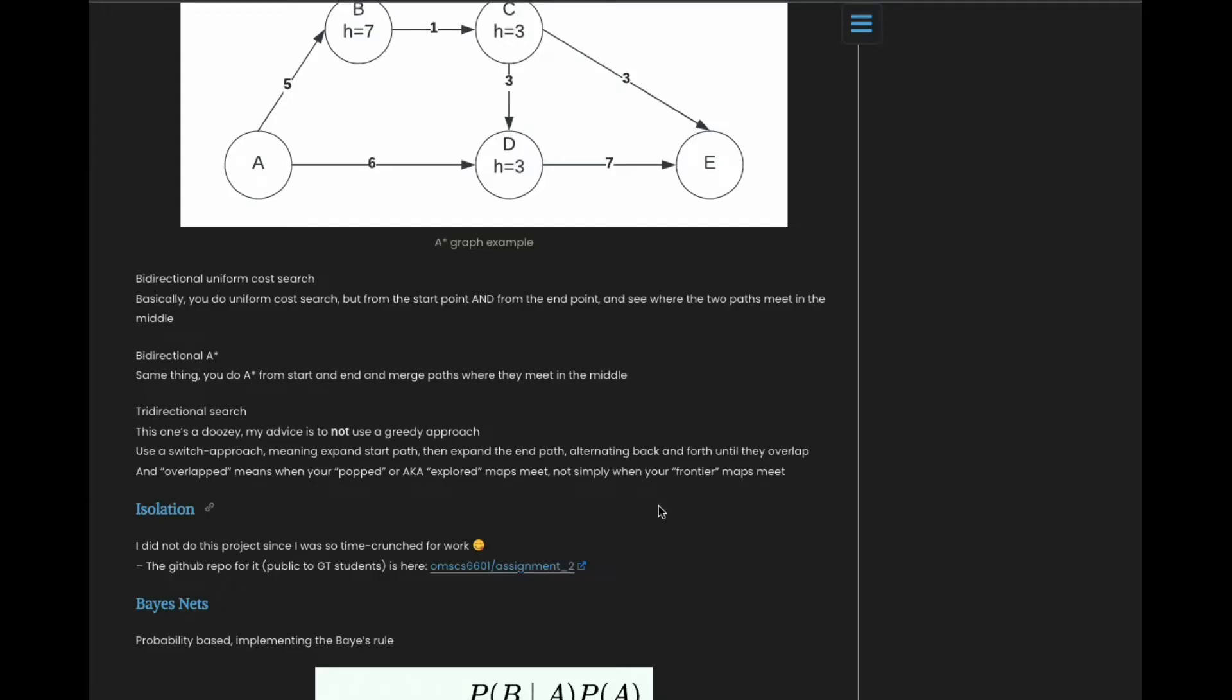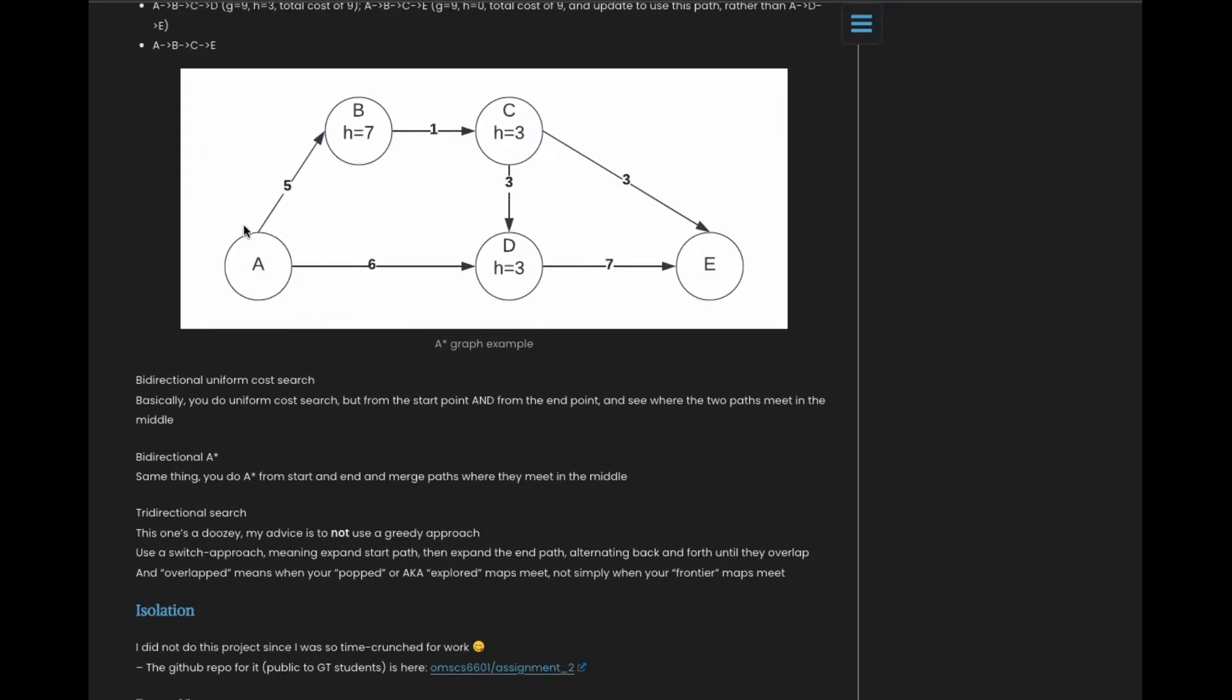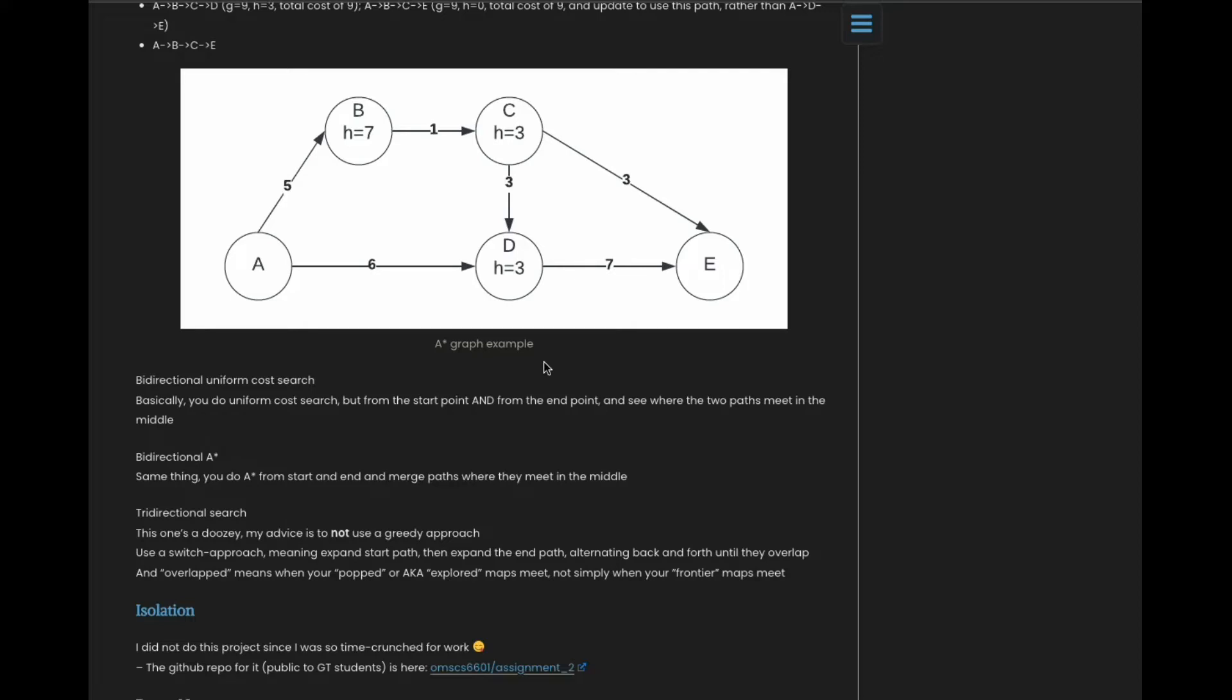The biggest advice is to switch between the three cities when you're expanding your paths. Go to the first city A, expand the paths so you get some new paths. Don't keep expanding A's paths. Go to the second city, which was C, and start to expand C's paths. Likewise, don't continue expanding C's paths. Go to E and then expand E's paths, and just keep rotating amongst the three. That way you'll find the best path between them all.